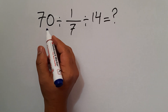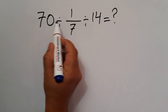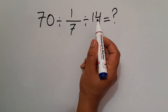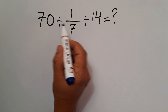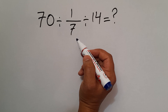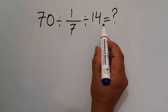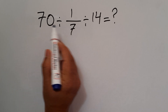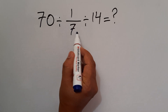Hey guys, welcome to this video. We want to find the value of this expression: 70 divided by 1 over 7, divided by 14. In this expression we have two divisions, and when we have more than one division in one expression, we have to work from left to right. So first: 70 divided by 1 over 7.